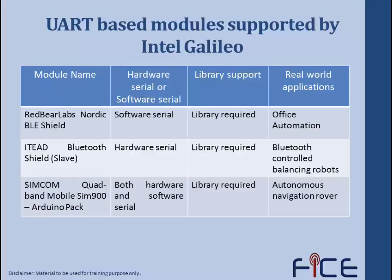The ITEAD Bluetooth Shield (slave) uses hardware serial and requires a library; it is used in Bluetooth-controlled balancing robots. The SIMCOM Quad Band Mobile SIM900 Arduino pack is a shield that requires both hardware and software serial, needs a library, and is used in autonomous navigation rovers.